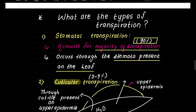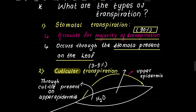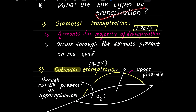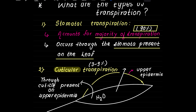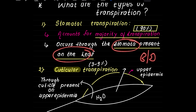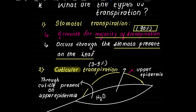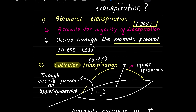There are types of transpiration. The first type is stomatal transpiration — transpiration through the stomata of the leaf. Stomatal transpiration removes the majority of water, around 90% of total transpiration.